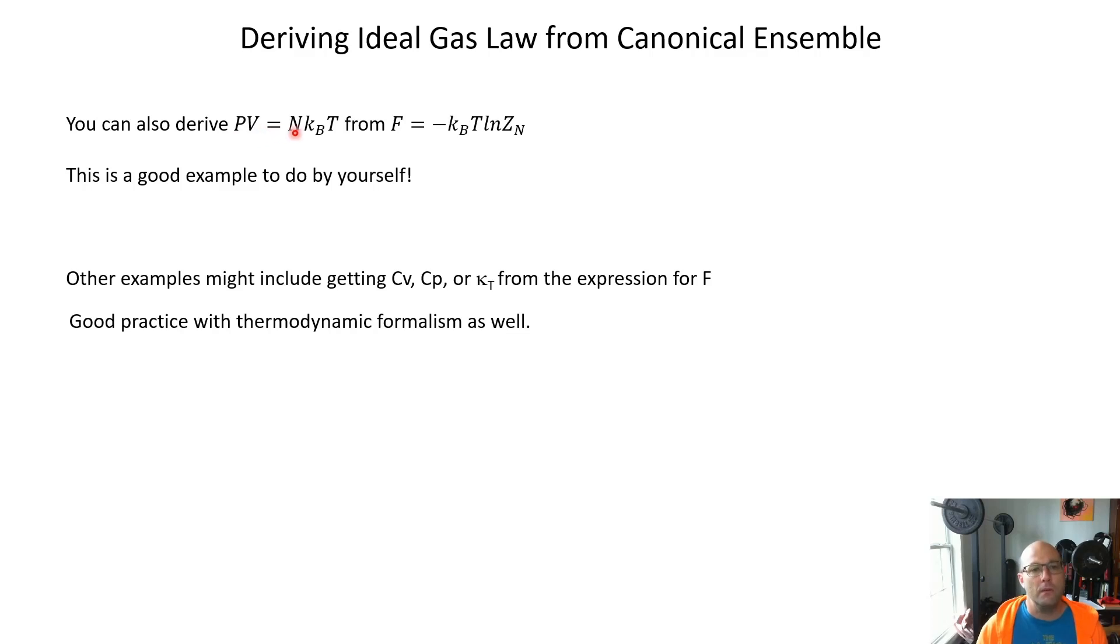You can also derive PV equals NkBT from F equals minus kBT ln ZN. You should do this example by yourself to show that it's true. You can also do examples where you would calculate cV, cP, kappa T. These are the response functions. They have simple partial derivative relationships connecting them to F that you can do all by yourself. This is easy fodder for test questions where it should be a couple line derivation that shows me how well you're able to work within this formalism that we've been doing in chapter five and connecting now to an idea in chapter six.